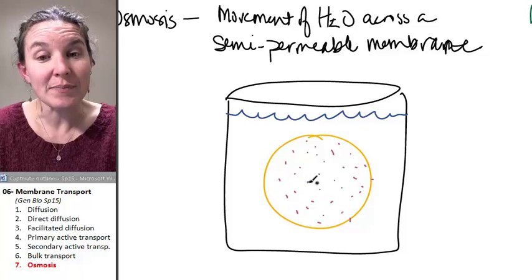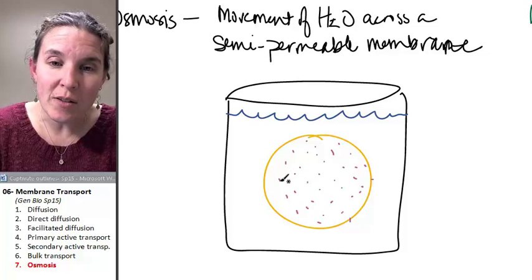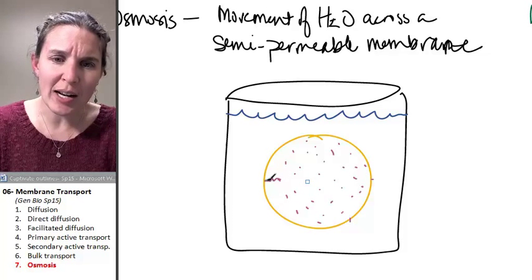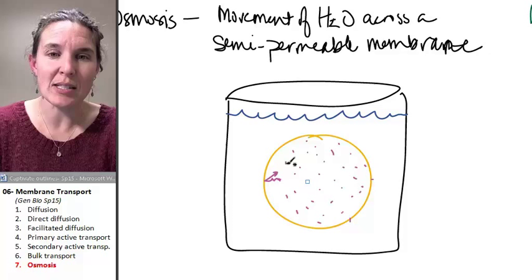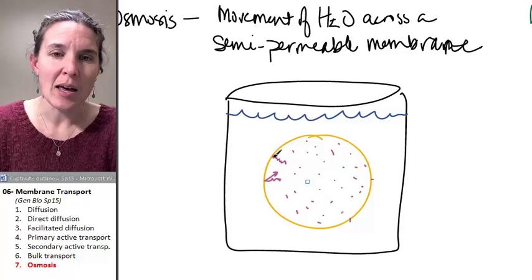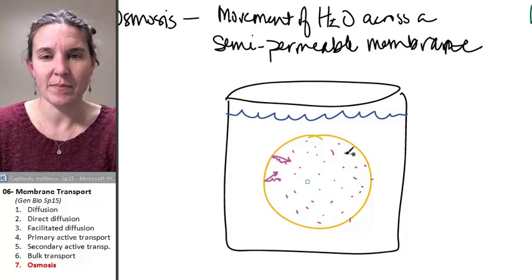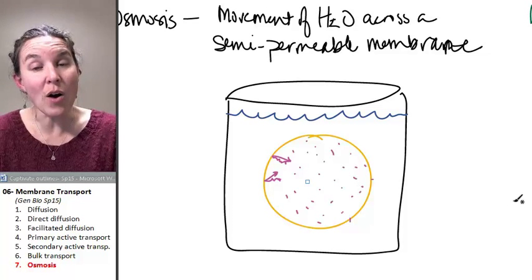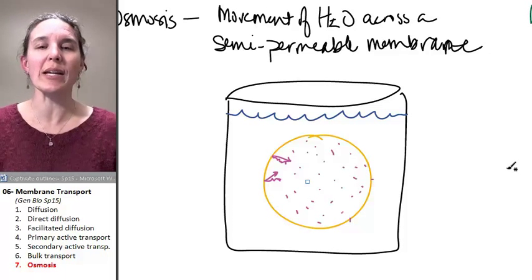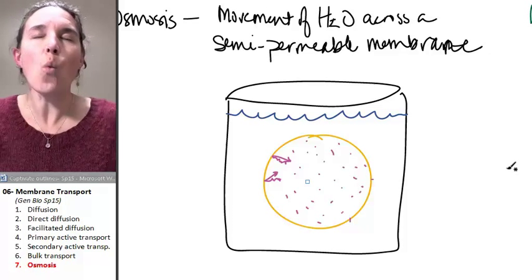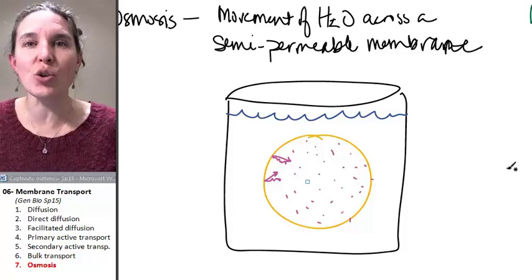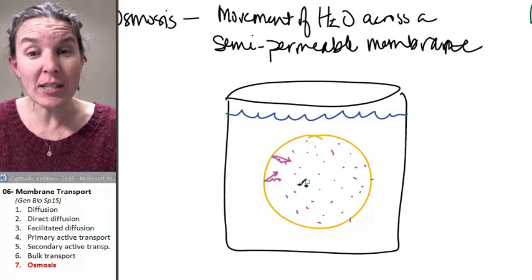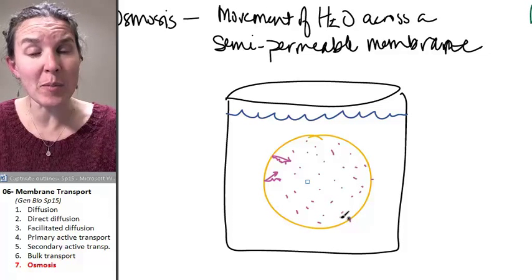But what if those particles, they want out, right? There's a billion of them in there. What if they go and try to get out, but they can't get out? This is the particle coming in, and it bounces off. It gets rejected. It can't get out. None of these particles can get out. Now, are the concentrations different? Totally. And can you imagine what is water going to do?